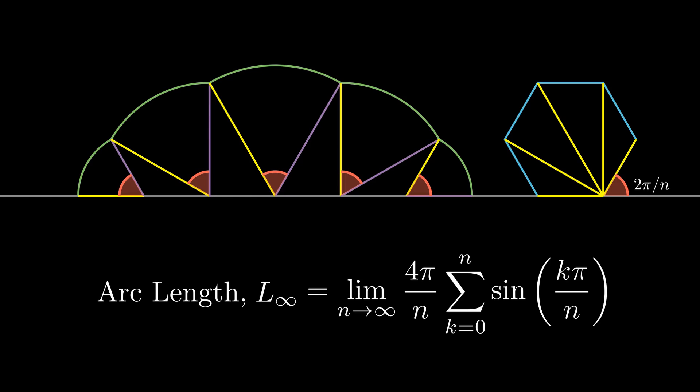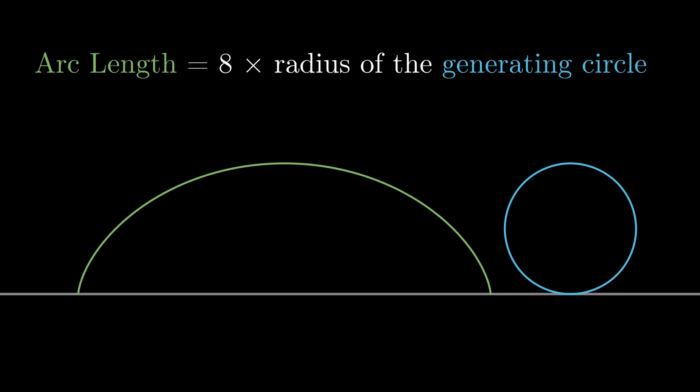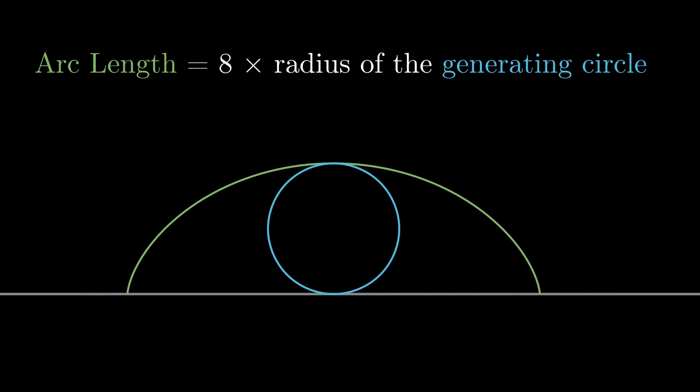As we know that L∞ represents the cycloid's arc length, we see that the arc length of a full cycloid is 8 times the radius of a generating circle. What I find really interesting with this proof is that all the ideas involved are completely elementary.